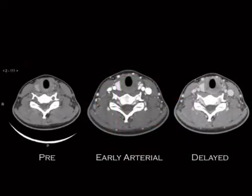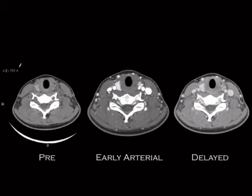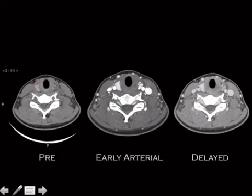First case: we have three CT images — pre, early arterial, and delayed. Notice that the thyroid gland is dense even on a non-contrasted study because it contains iodine. It becomes more dense with contrast because it is very vascular and will take that contrast up.